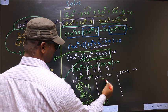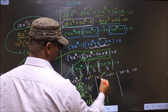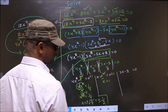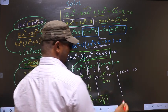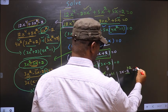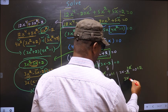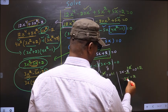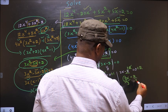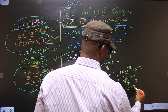From x minus 1 equal to 0, I should remove minus 1 — for that you add 1. So you get x equal to 1. Now for 3x minus 2 equal to 0, first you should remove minus 2 — for that you add 2. This cancels out, you get 3x equal to 2. Now you should remove 3, so you divide by 3. You get x equal to 2 by 3.